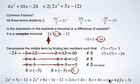We common factor once again and we have x plus 4 times 2x minus 3. So our factored form of 4x squared plus 10x minus 24 is equal to 2 times x plus 4 times 2x minus 3.